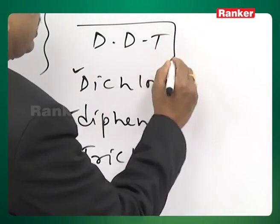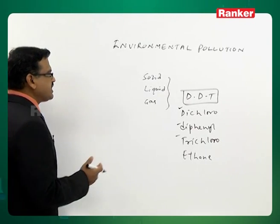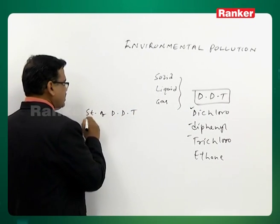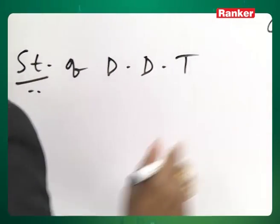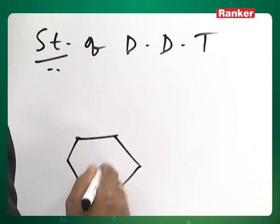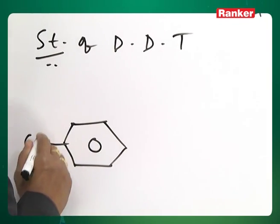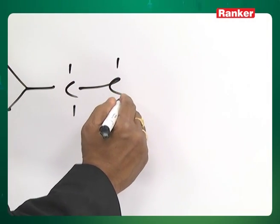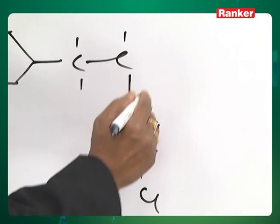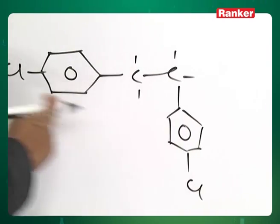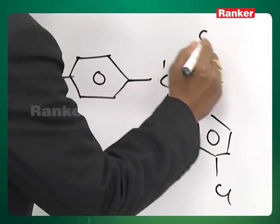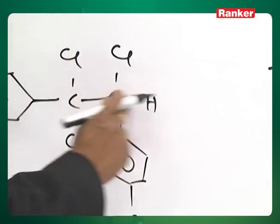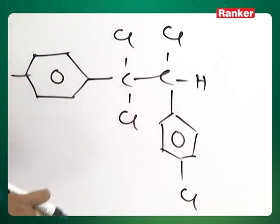DDT is a chlorinated compound. Its structure — dichlorodiphenyl trichloroethane — consists of two chlorophenyl groups attached to a central carbon, and another phenyl group bearing a chlorine substituent. This gives us the dichloro and diphenyl portions, along with the trichloroethane portion containing two carbons. This is the structure of DDT.